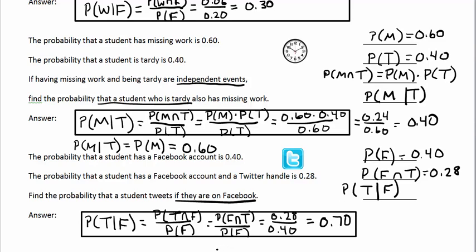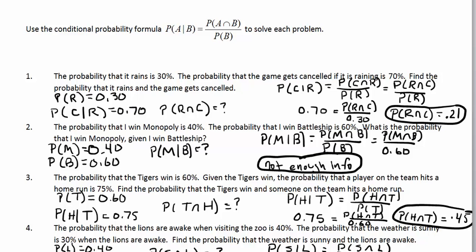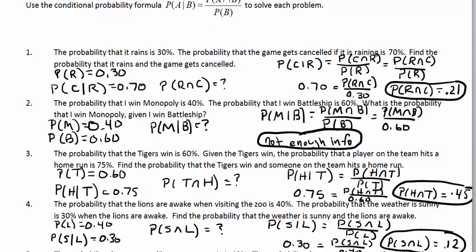Pause the video and work on the problems on the back of the worksheet. Looking at the answers: problem one, you're given P(C|R) = 0.70 — the probability the game gets canceled if it's raining — and P(R) = 0.30. We don't know P(C and R), that's what we're finding. Multiply those two numbers to get P(C and R) = 0.21.